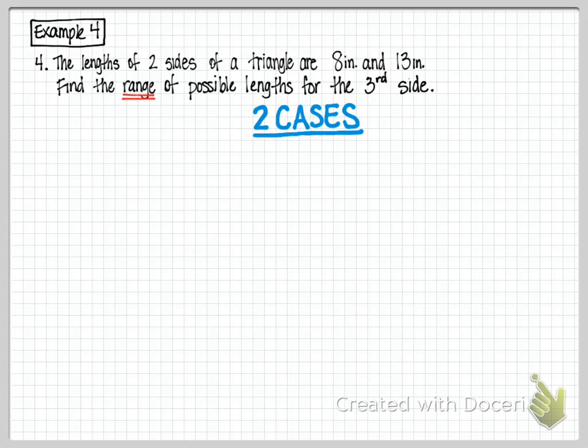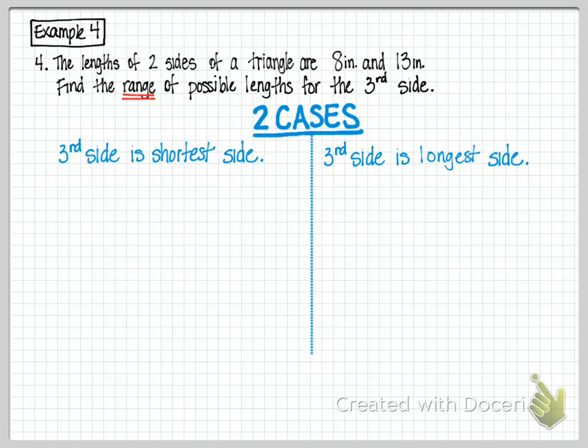Well, it's two cases. That third side could be the shortest of the three sides in a triangle, or that third side could be the longest of the three sides in a triangle. So I can even draw a little picture to kind of look at the shortest side first. And this would be perhaps a picture of one where the third side, the unknown side, is shorter than either 8 or 13 inches.